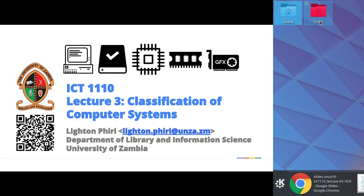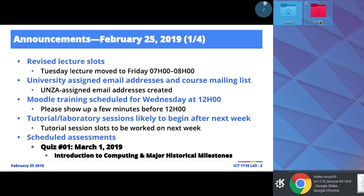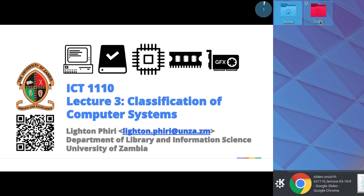Lecture number three is on classification of computer systems. It's a fairly short lecture series. We just want to get an appreciation of the various types of computer systems that are available, so that when we start zeroing in on our discussion of the high-level components, specifically our emphasis on the von Neumann architecture, we'll have an idea of the functional attributes exhibited by the various types of computer systems.